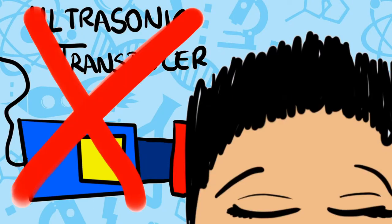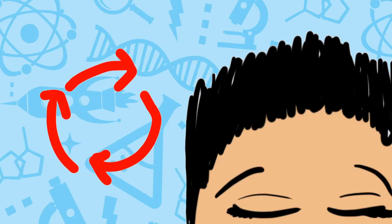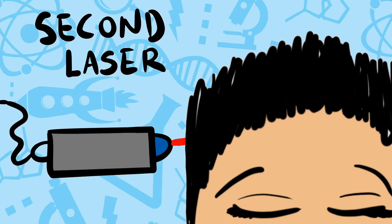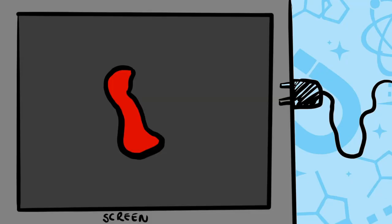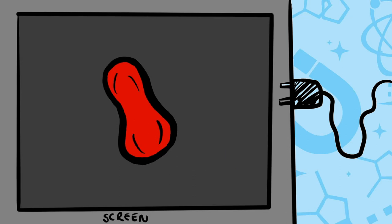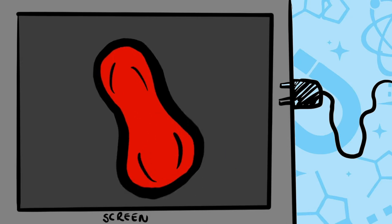So in nanoscale photoacoustic tomography, what we do is we swap out the ultrasound transducer and instead use a second laser beam for detection. By using a second laser in lieu of a transducer for detection, we're able to pick up much, much higher frequencies than conventional transducers can, thereby improving our resolution down to the nanoscale and allowing for single cell imaging.